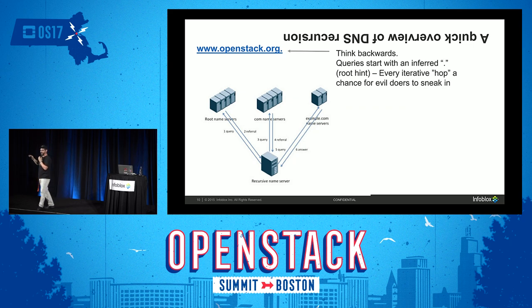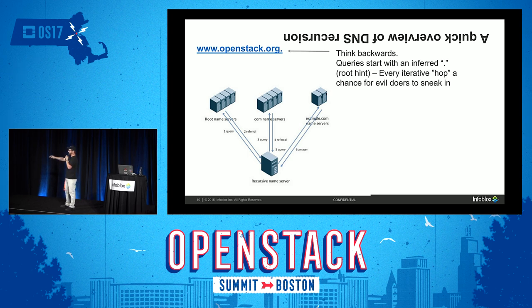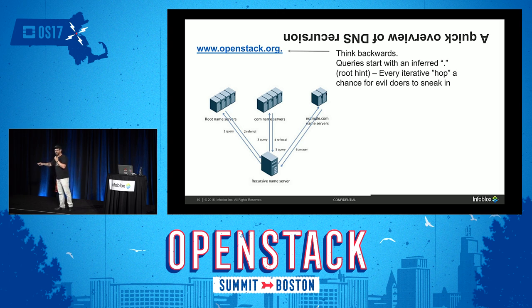An important thing to remember about DNS is it's actually read from right to left. There are root servers first — you go to root and say, 'where is .com, where is .org?' Then it iterates through steps until you get the IP address mapped to your name. You start with an inferred dot — you type www.openstack.org, but it's actually openstack.org dot. And that dot is where the conversation starts. There are multiple hops in finding this label, and every time there's that iteration, there's a chance for a bad guy to sneak in the wrong IP address and send you to their server to capture your data.